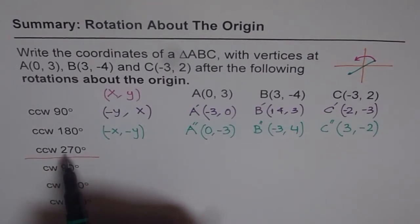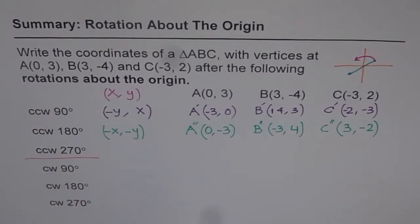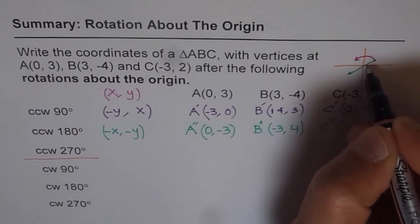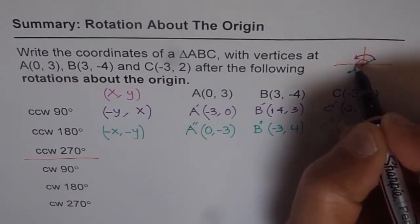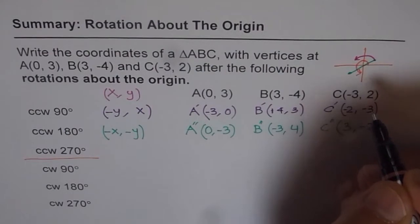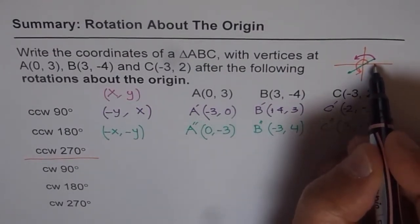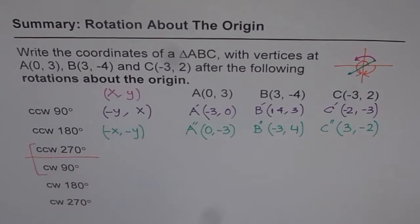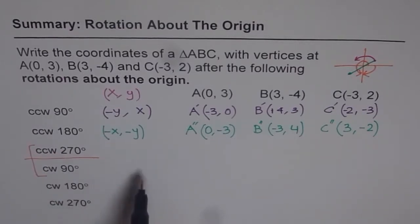If you do counter-clockwise 270 degrees, think of it this way: 90, 180, 270 — going all the way around. Counter-clockwise 270 is the same as clockwise 90. So both transformations are exactly the same, and we'll apply the clockwise 90 rule to get those results.